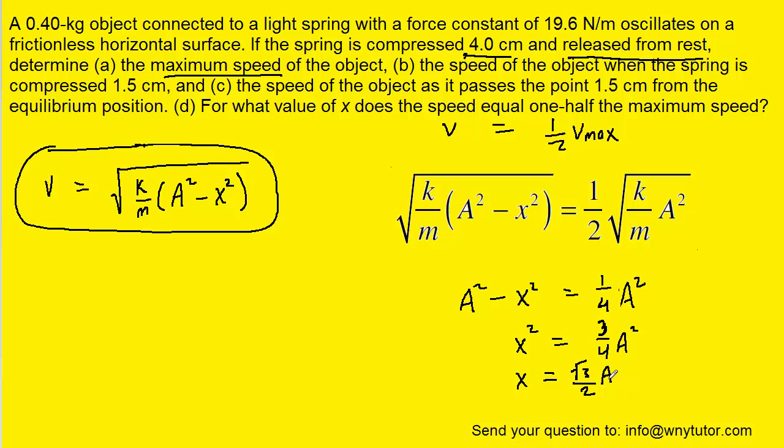So now all we have to do is multiply the amplitude which was that 4 centimeters by radical 3 over 2. And when you plug that into your calculator you should get a value of x of approximately 3.5 centimeters. So that is indeed the correct answer to part D.